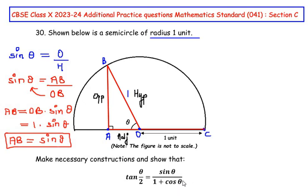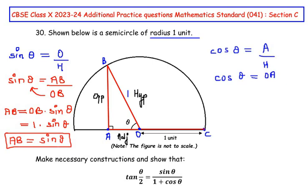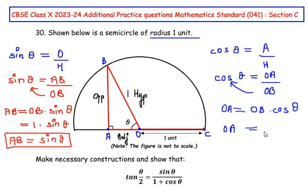Now since we need cosθ as well, let us find it. The trigonometric ratio cosθ is represented as adjacent side divided by the hypotenuse. In this triangle, cosθ equals OA over OB. Multiplying both sides, OA equals OB times cosθ. Since OB is 1 unit, OA equals cosθ. We will highlight this result as well.